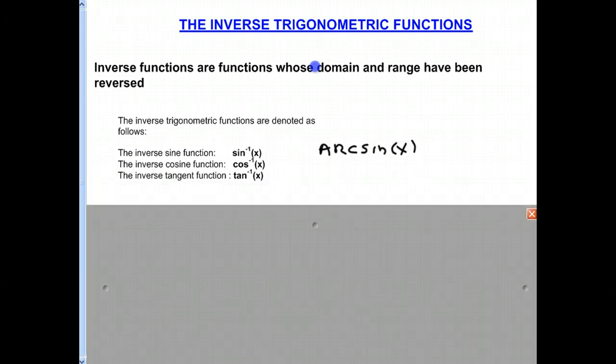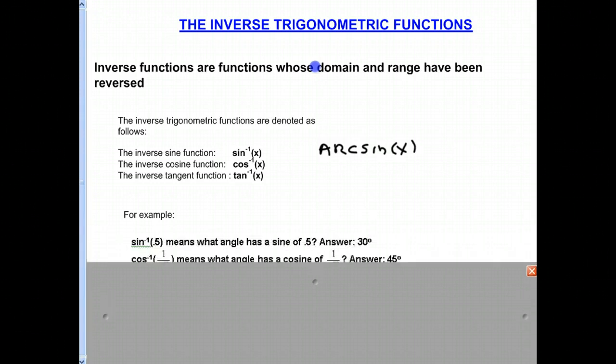Okay. So let's look at a little example. So if I said to find the inverse sine of 0.5, what that means is what angle has a sine of 0.5? And hopefully most of you remember that it's 30 degrees. If you've forgotten it, I could draw our little triangle that indicates the ratios.